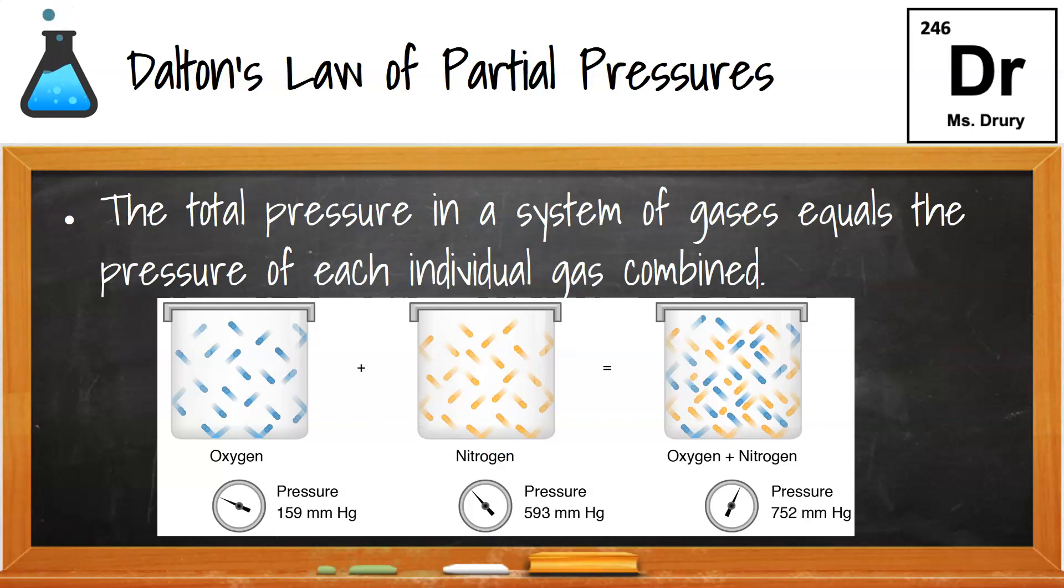And the last law was Dalton's law of partial pressures. The total pressure of a system of gas equals the pressure of each individual gas. So in the first system, you see oxygen's 159, and nitrogen's 593. And if you put them in the same container together, they add up. 159 plus 593 is 752. They combine their pressure.